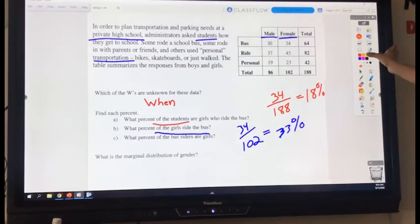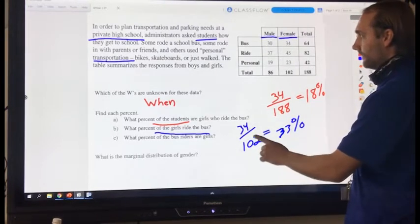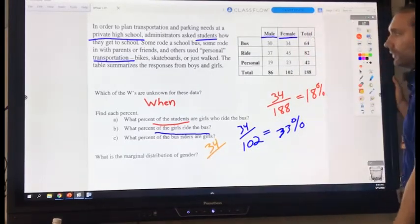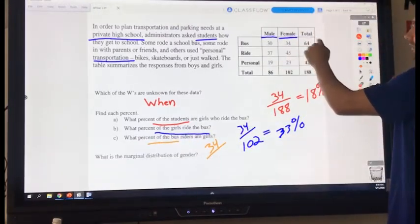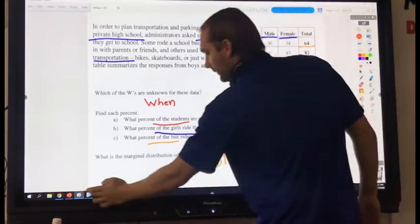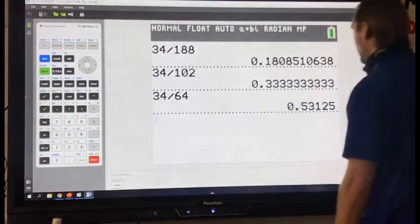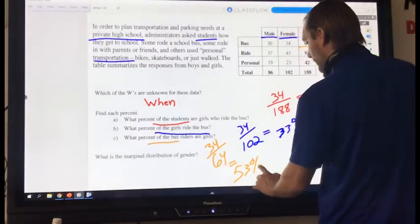Next question, what percent of bus riders are girls? So what goes on top? 34. And what's my total? What total am I looking for? 64. Starts with the total. So what total gives me there? 64. So 34 divided by 64 is 53%. Almost half.